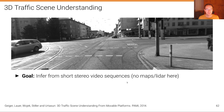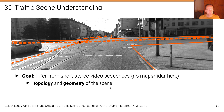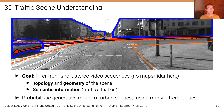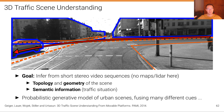The goal is to infer from a short stereo video sequence — in this project called 3D traffic scene understanding from movable platforms — so no maps, no LiDAR here, just the topology and geometry of the scene, semantic information such as the traffic situation, the traffic pattern currently occurring, and the state of traffic lights. Without directly observing the traffic lights, we can figure that out by seeing how things are moving. We also generate a probabilistic generative model of urban scenes fusing many different cues, exploiting prior knowledge about intersection geometry and traffic rules such as right-handed traffic in Europe.